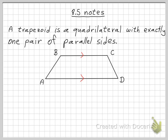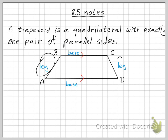The parallel sides — BC and AD — are called the bases. In geometry, unlike everyday language where the base is just the bottom, a trapezoid can have a base on the top as well. So the parallel sides are called the bases, and the non-parallel sides are called the legs. Any trapezoid has two pairs of base angles: B and C would be one pair, and A and D would be another pair.